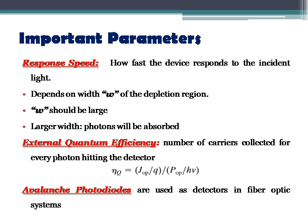When the device is reverse biased, the entire applied voltage appears across the I region. If the carrier lifetime within the I region is long compared to the drift time, most of the photo-generated carriers would be collected by the N and P regions.